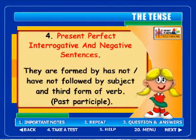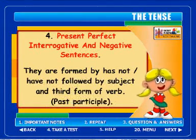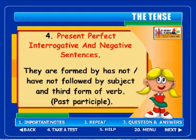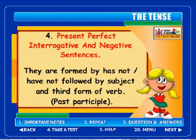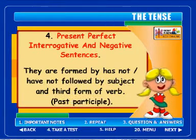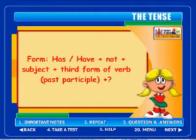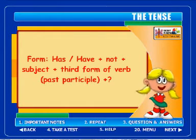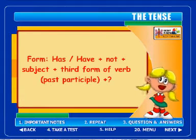Present perfect interrogative and negative sentences are formed by 'has not' or 'have not' followed by the subject and the third form of the verb (past participle). The formula is: has/have + not + subject + third form of verb (past participle) + question mark.